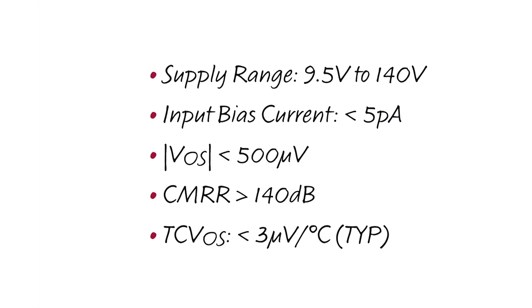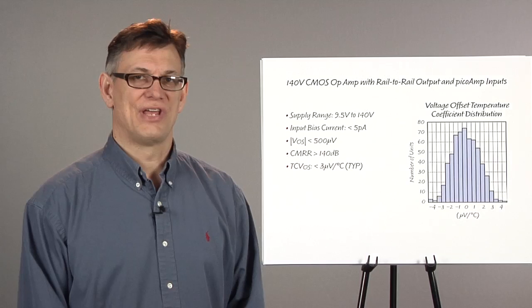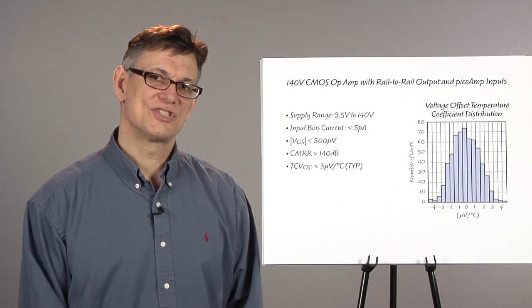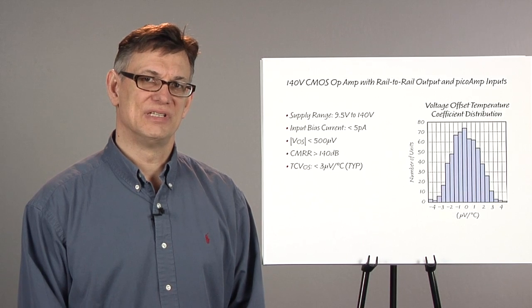Operating the LTC6090 on 140-volt power supplies implies the possibility of significant internal power dissipation. So the amplifier comes packaged in either an exposed pad 8-pin SOIC or a 16-pin TSSOP.